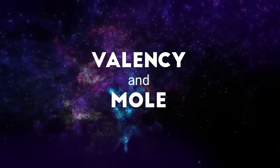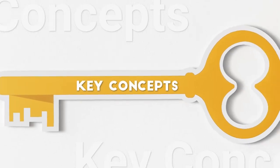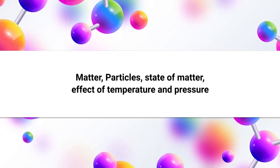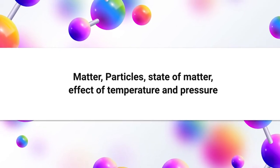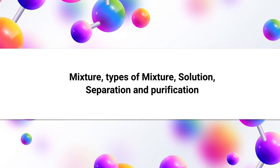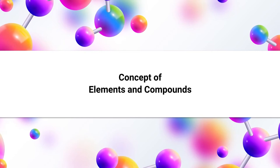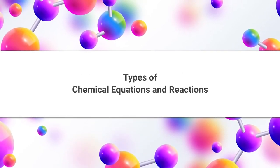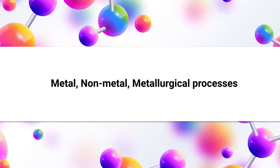Today I will discuss how you will deal with this topic in your class when you are explaining or exposing your learners to these concepts. Under the theme 'Material,' the main concepts covered in the curriculum from class 6 to class 10 include: matter, particle, state of matter, effect of temperature and pressure on state of matter at class 6 level; mixtures, types of mixtures, solution, colloidal solution, separation and purification techniques; then element and compound, atom, molecule, chemical formula, concept of mole and valency; then types of chemical equations and reactions; and metals, non-metals, and metallurgical processes.